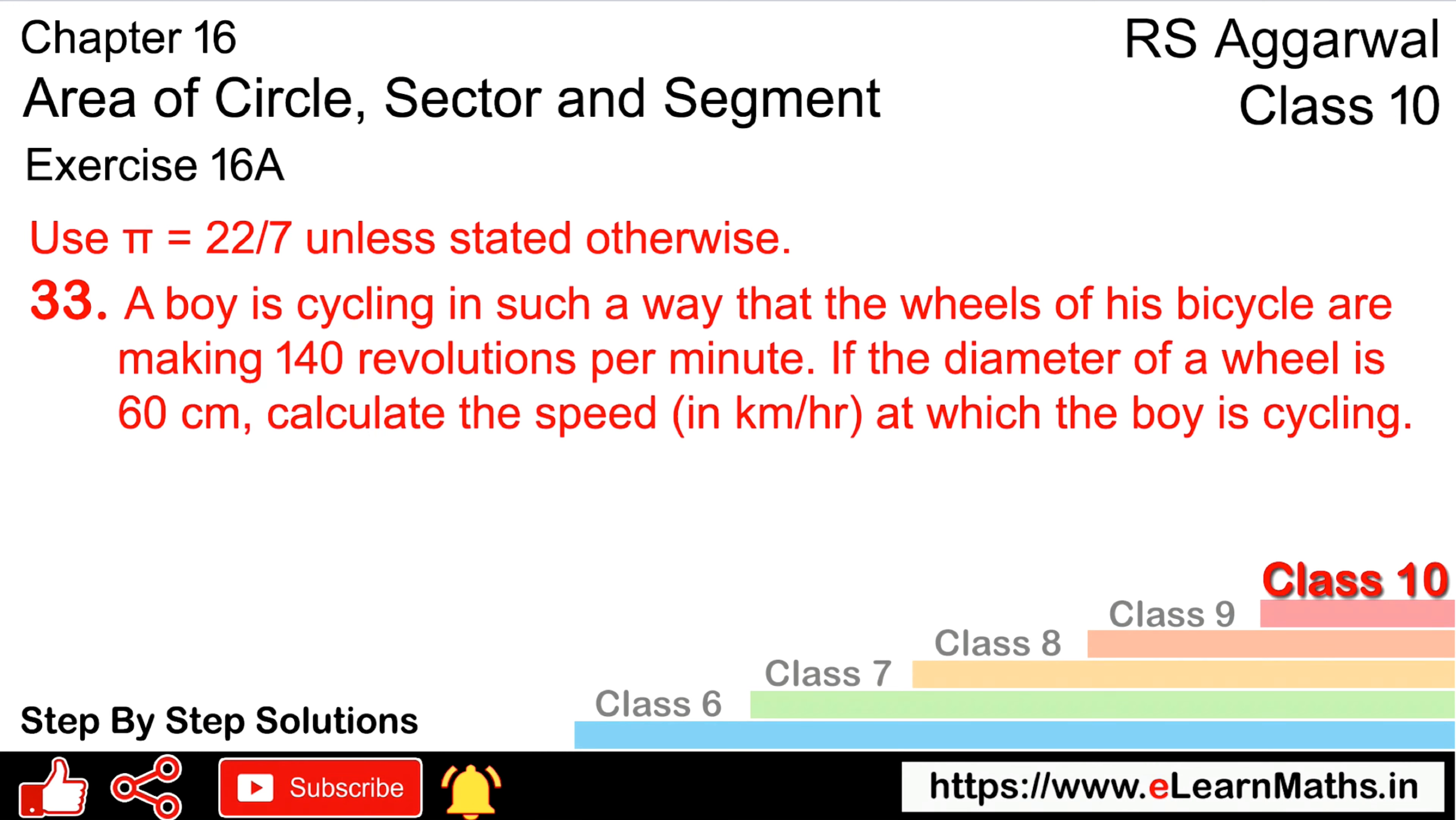Let's do question number 33 of exercise 16A, that is area of circle. Question number 33: A boy is cycling in such a way that the wheels of the bicycle are making 140 revolutions per minute.